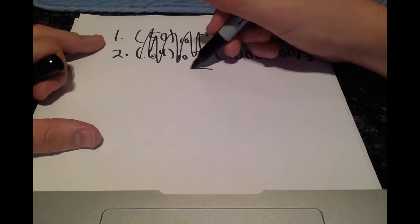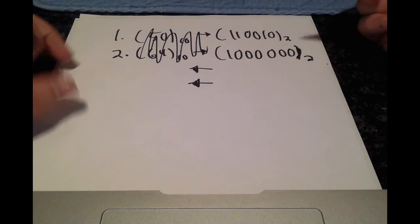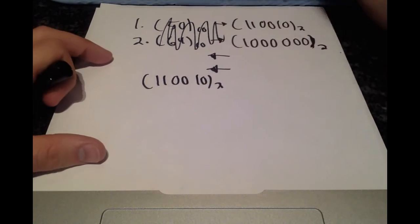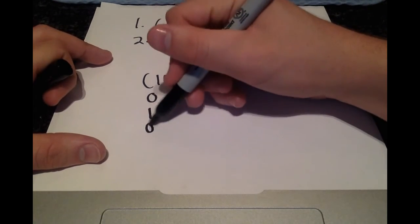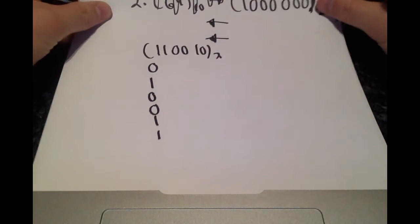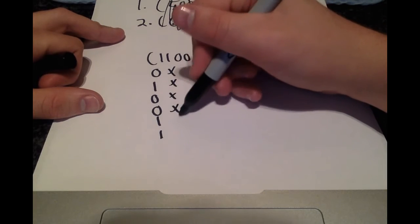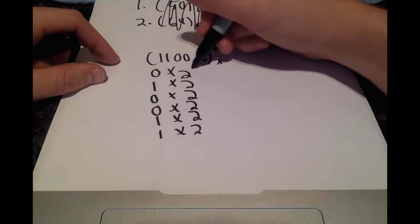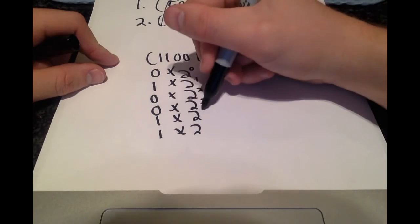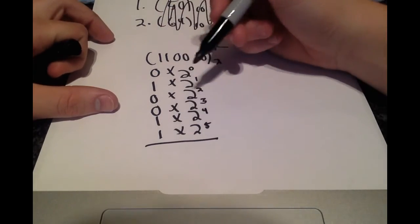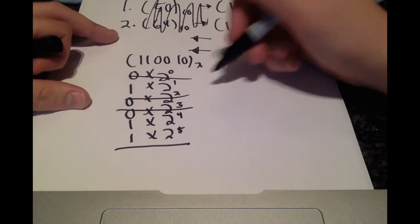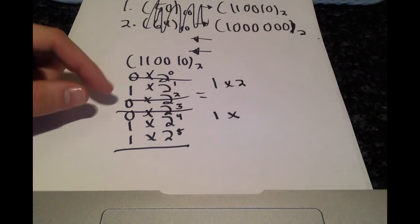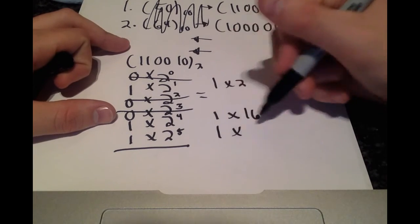If we want to go backwards — converting these base 2 numbers to base 10 — what we're going to do is rewrite the number backwards: 0 1 0 0 1 1, then multiply each digit by 2 raised to a different power. We start raising it to the 0 power and increase by 1 each time. The 0 terms immediately drop out, leaving 1 times 2¹, 1 times 16, and 1 times 32.